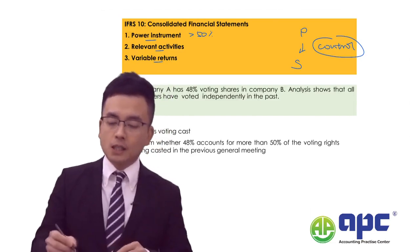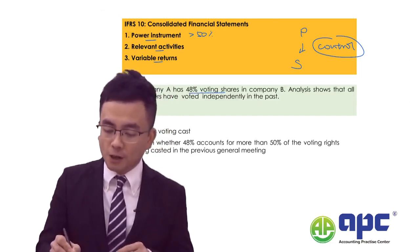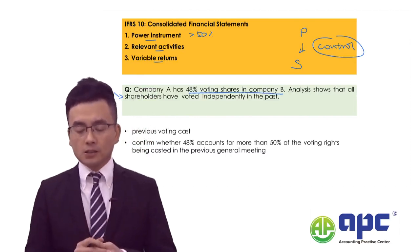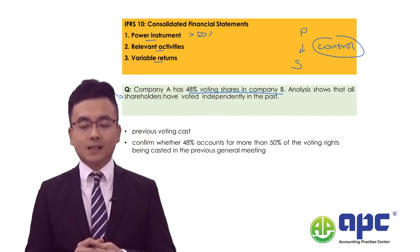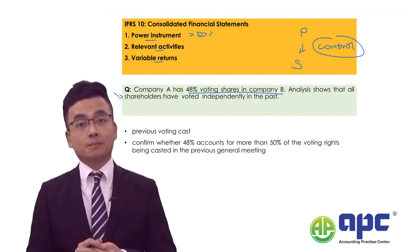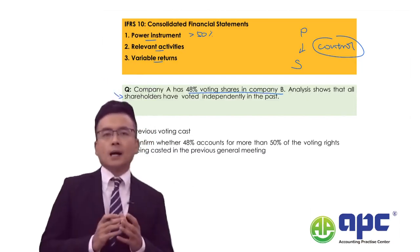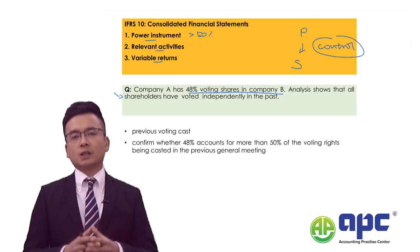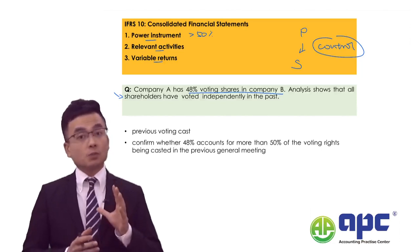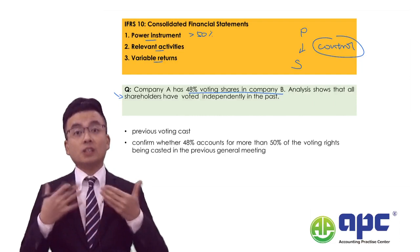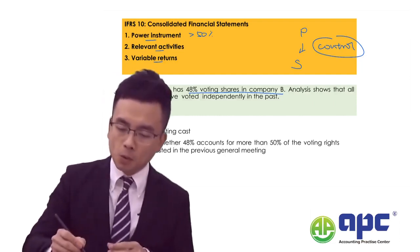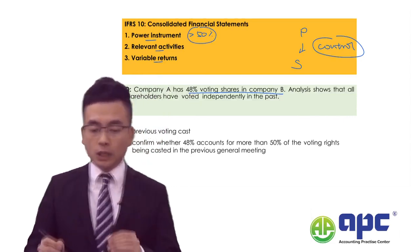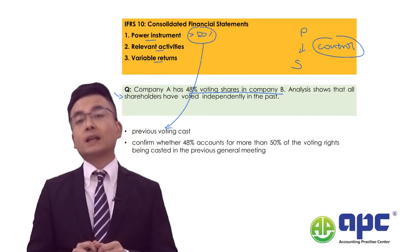Let's see a case. Company A has 48% voting shares in Company B, which is less than 50%. Analysis shows that all shareholders have voted independently in the past. Now, from Company A's point of view, do we have control over Company B? The answer is we are not particularly sure — we need to discuss. What do we mean by more than 50%? It is based on the previous voting costs.